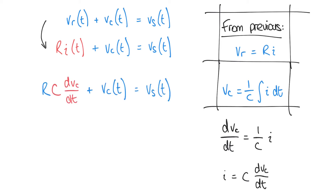Now we can substitute for I in the circuit equation. Rather than RI(t), we substitute I equals C·dVC/dt, giving us RC·dVC/dt plus VC(t) equals VS(t). Notice that the left-hand side is now entirely in terms of the output VC, and the right-hand side is entirely in terms of the input VS. We've created a first order differential equation expressed only in terms of the input and output of the system.